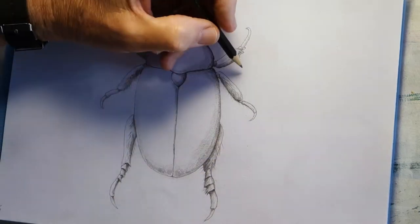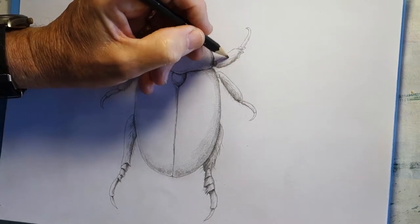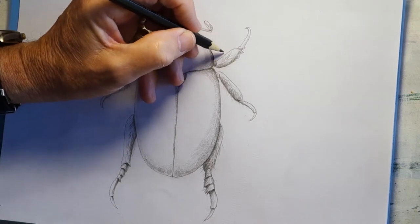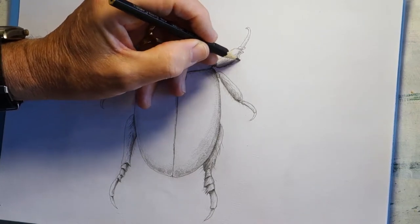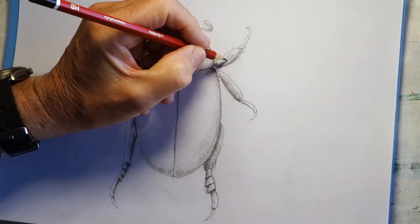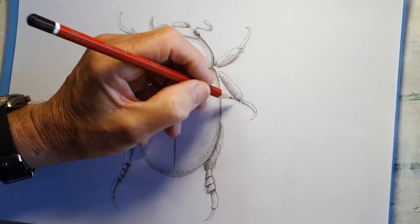For hairy animals, use short strokes or long strokes, depending on the length of the hair. For this beetle, the hair is rather sparse, so it's random short strokes, and you just lay the strokes one over the top of the other.